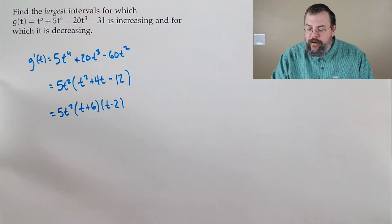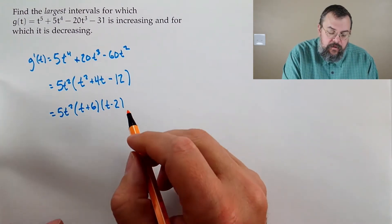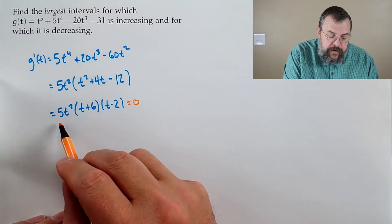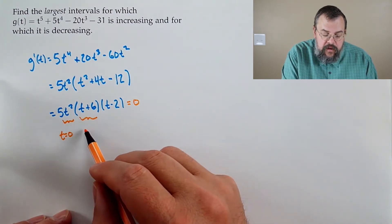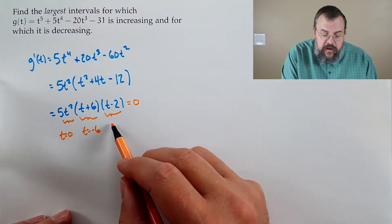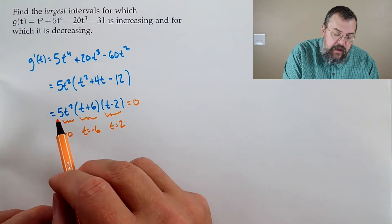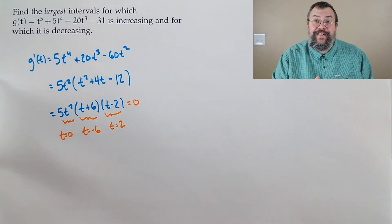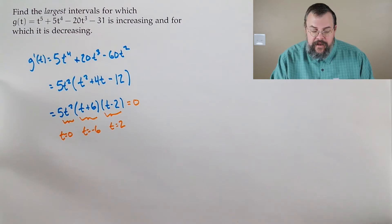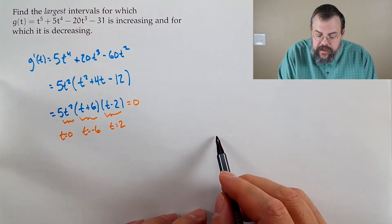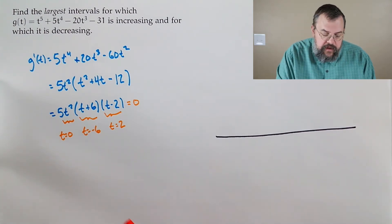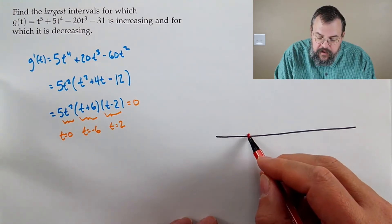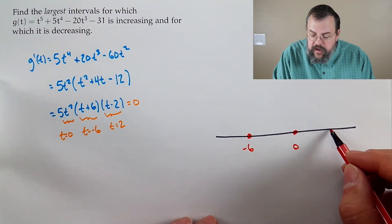When does this equal zero? The t squared factor gives us t equals 0. The t plus 6 factor gives t equals negative 6. And t minus 2 gives t equals positive 2. Note that 5 is never zero — 5 is just 5. So there are three critical points. Drawing our number line and marking them in order: negative 6, then 0, then 2.